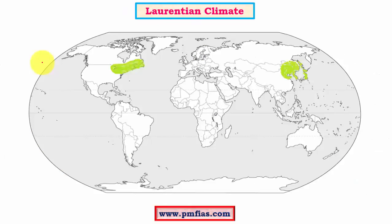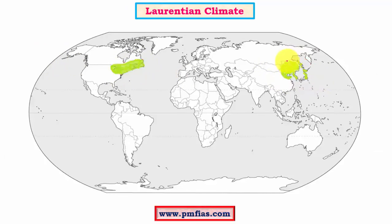Laurentian type, also called Temperate Eastern Margin climate, has two variations: North American and Asiatic type. Summers are very warm and winters are very cold. Most of these regions have rich soft and hardwood trees which are very useful from an economic perspective.